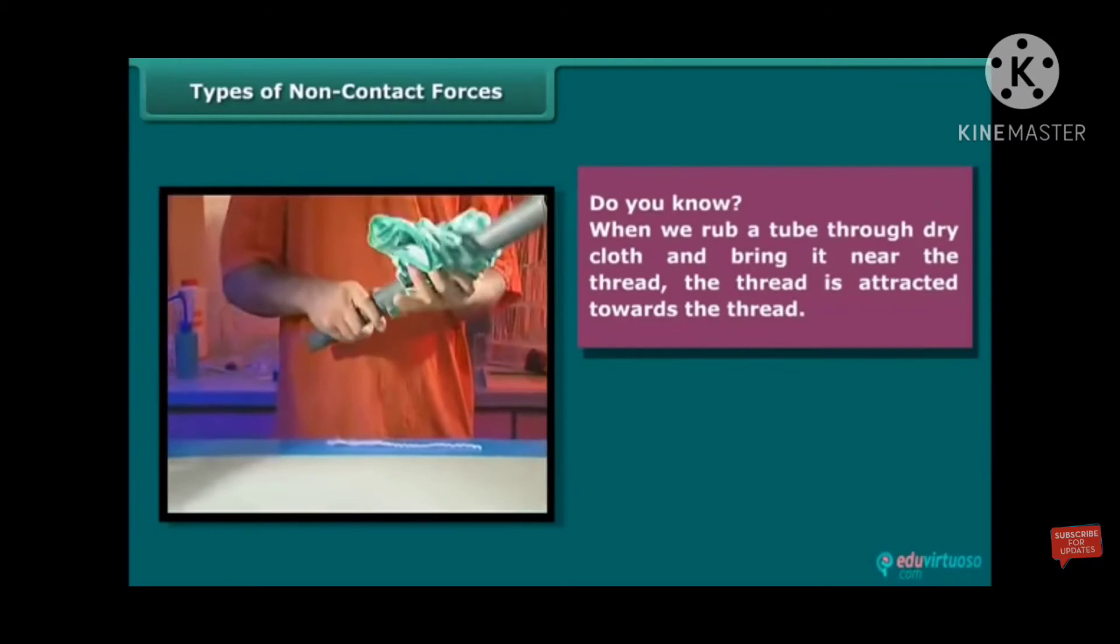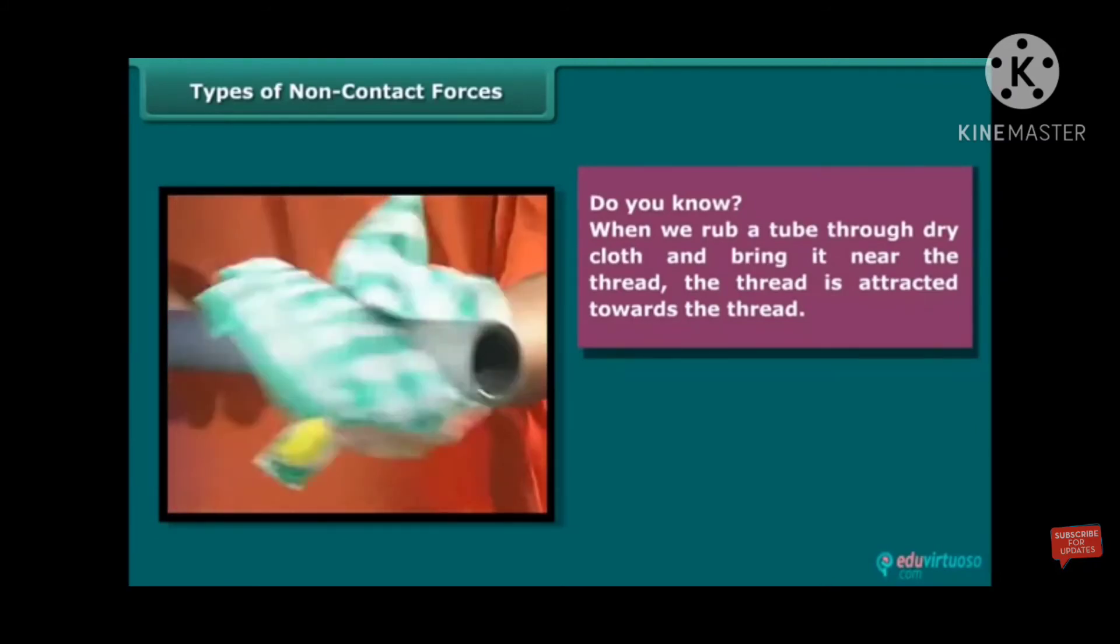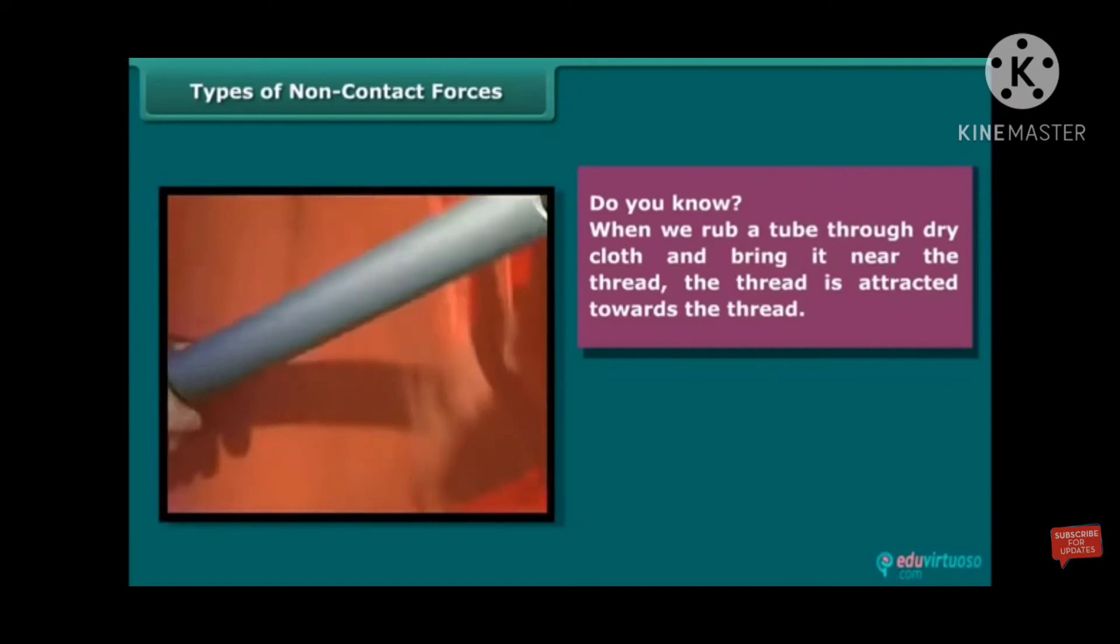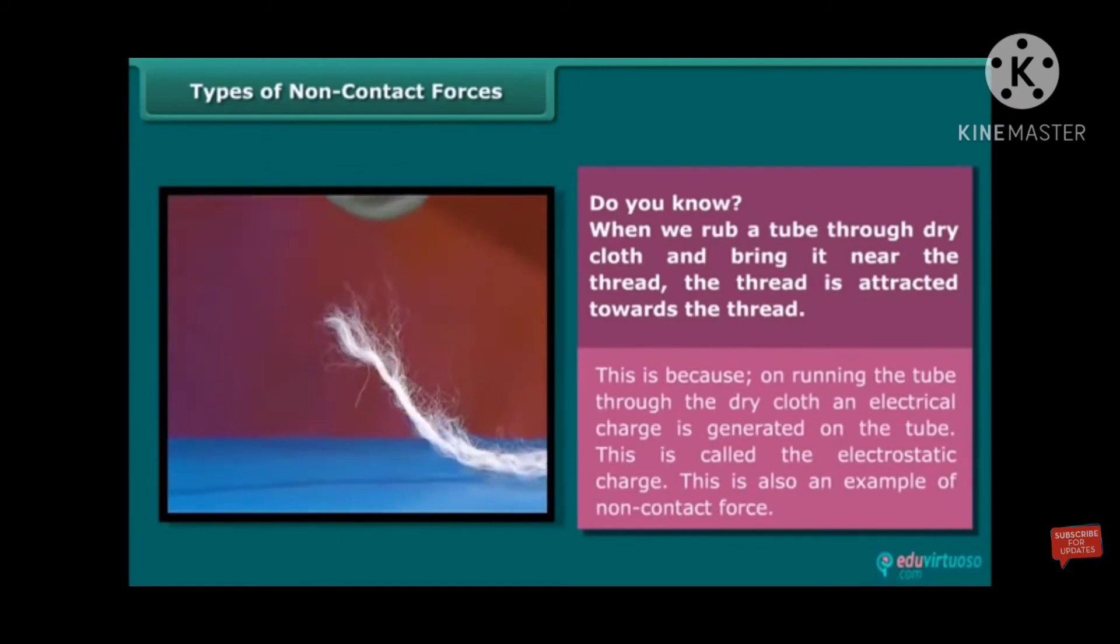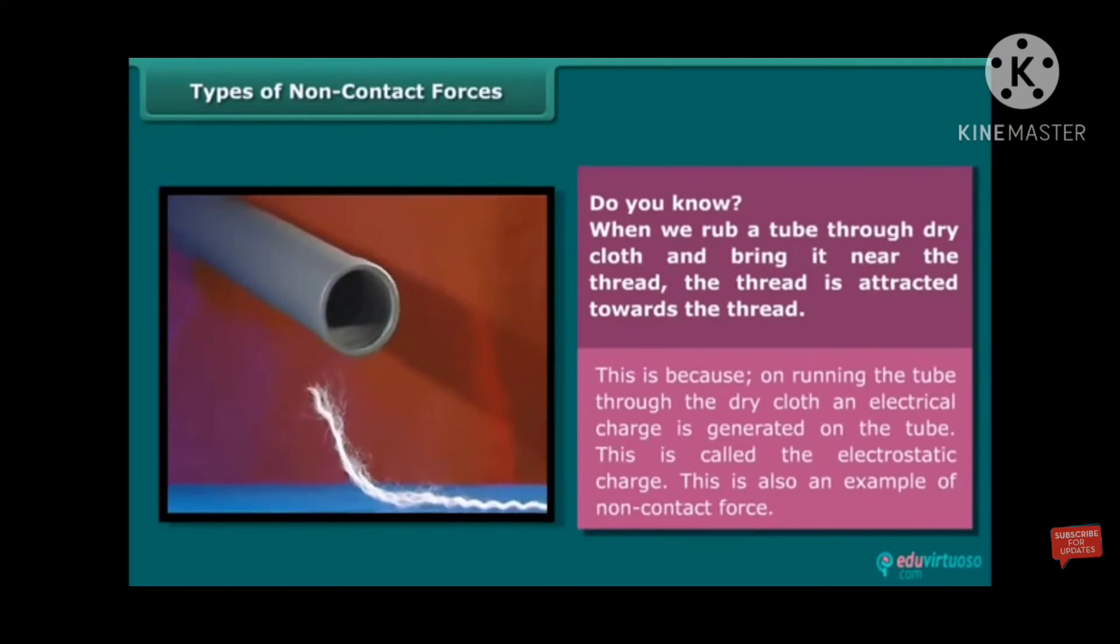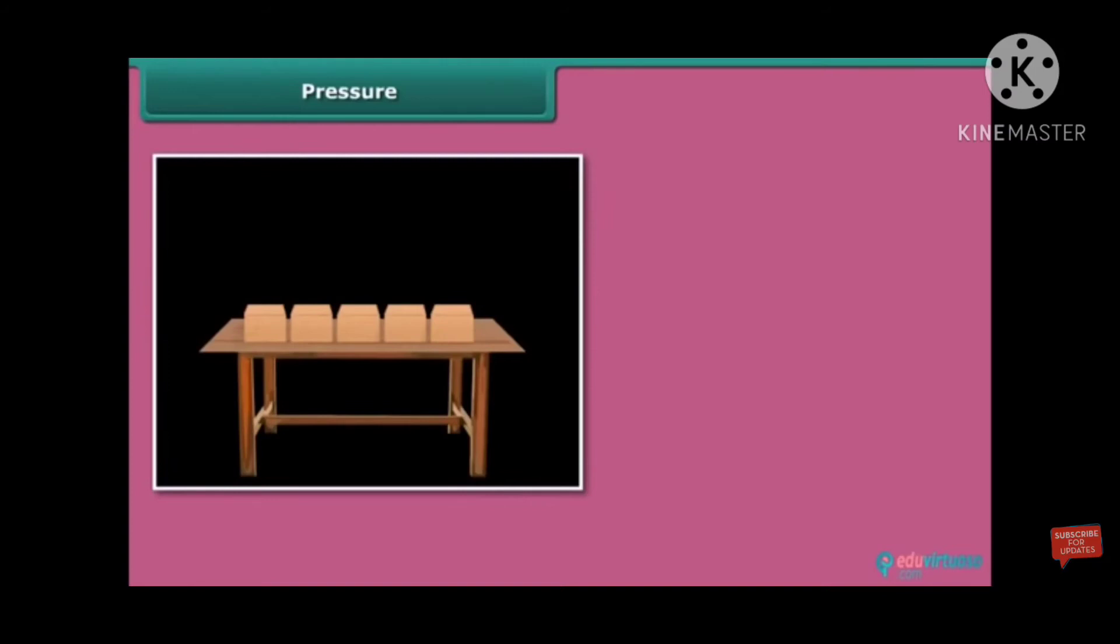And next, we shall learn about another force. When we rub a tube through dry cloth and bring it near the thread, the thread is attracted towards the tube. This is because, on rubbing the tube through the dry cloth, an electrical charge is generated on the tube. This is called the electrostatic charge. This is also known as an example for electrostatic force.